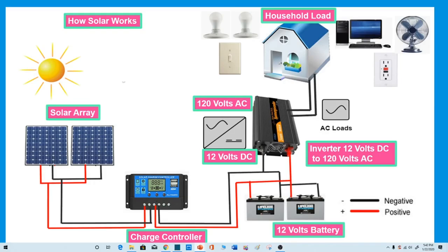Direct current (DC) is a continuous flow of electricity through a conductor such as a wire. Alternating current (AC) is an electric current that reverses its direction many times a second at a regular interval, typically used in our homes.